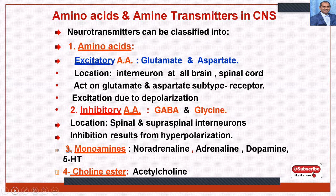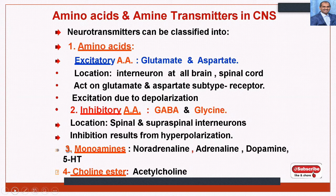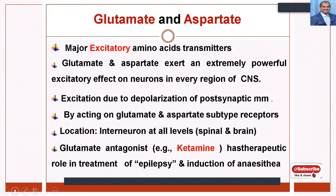Monoamines include noradrenaline, adrenaline, dopamine, and 5-hydroxytryptamine (as studied in autonomic pharmacology). Cholinergic neurotransmitters include acetylcholine. Glutamate and aspartate are excitatory amino acid neurotransmitters, while GABA and glycine are inhibitory neurotransmitters. Monoamine neurotransmitters are noradrenaline, adrenaline, dopamine, and serotonin. All types of neurotransmitters are present in the central nervous system.